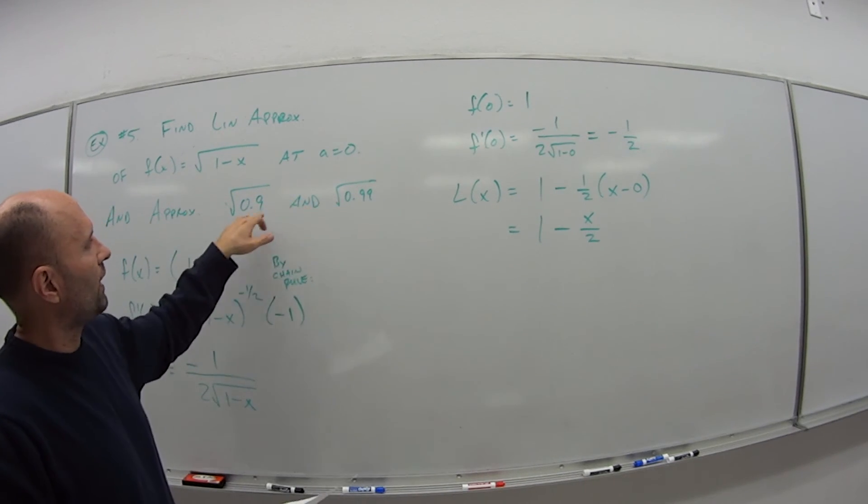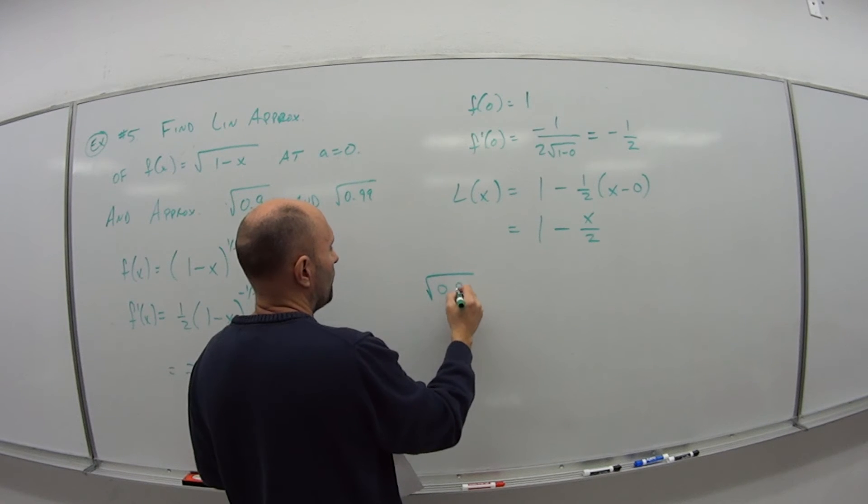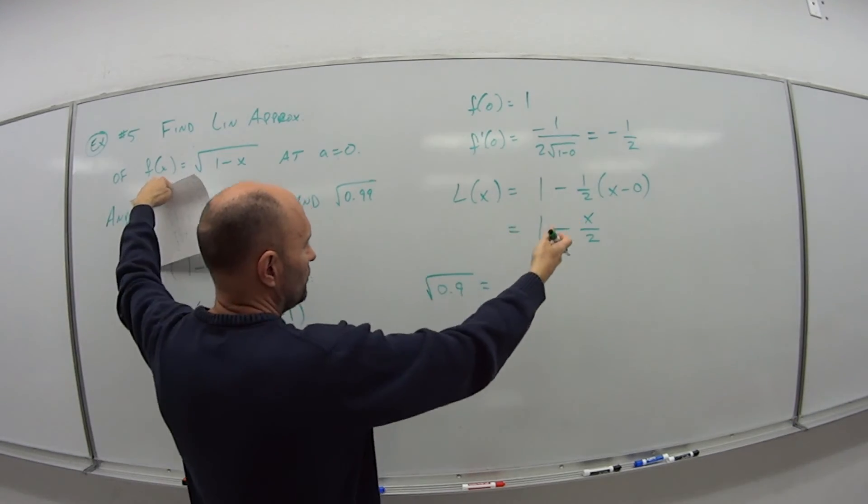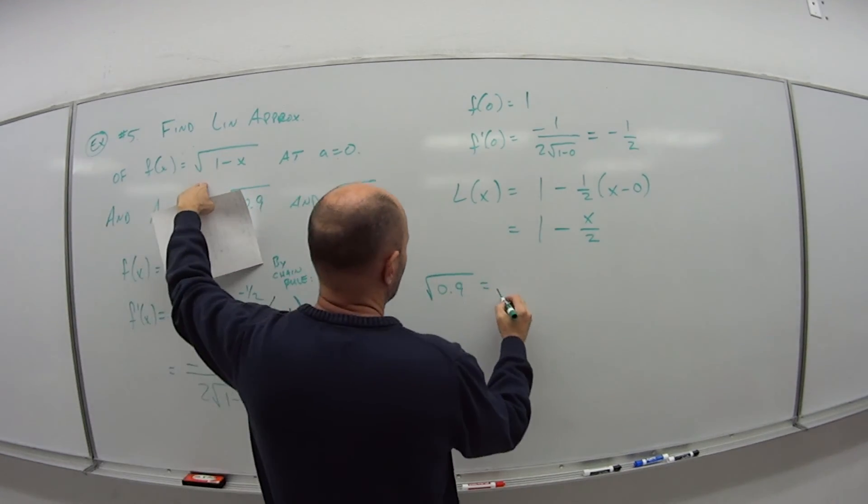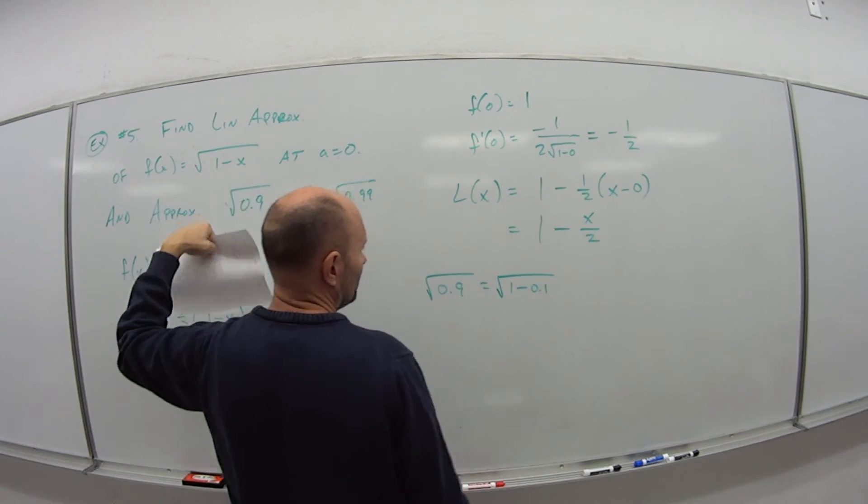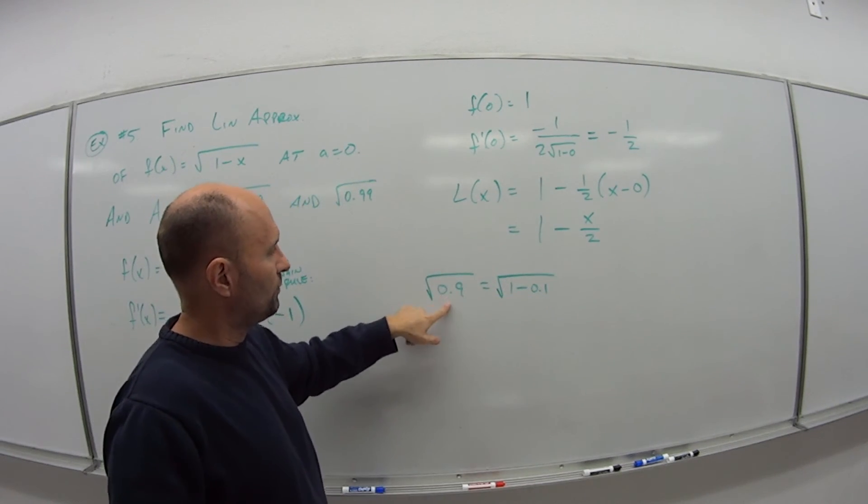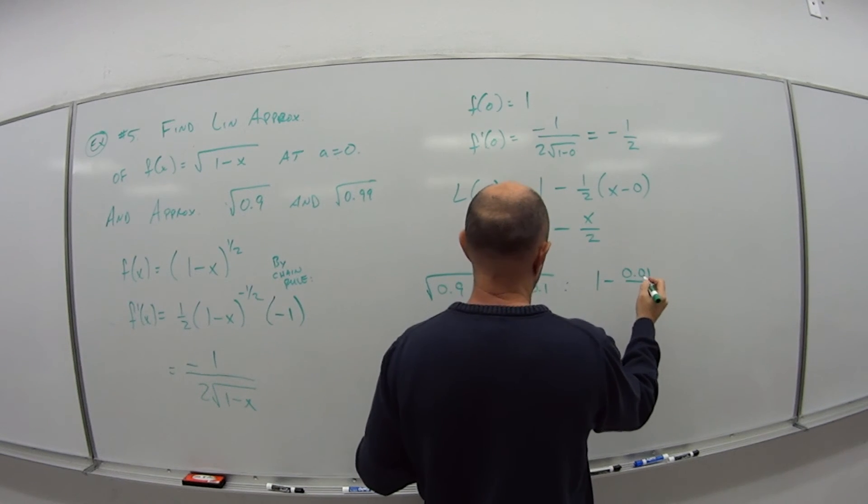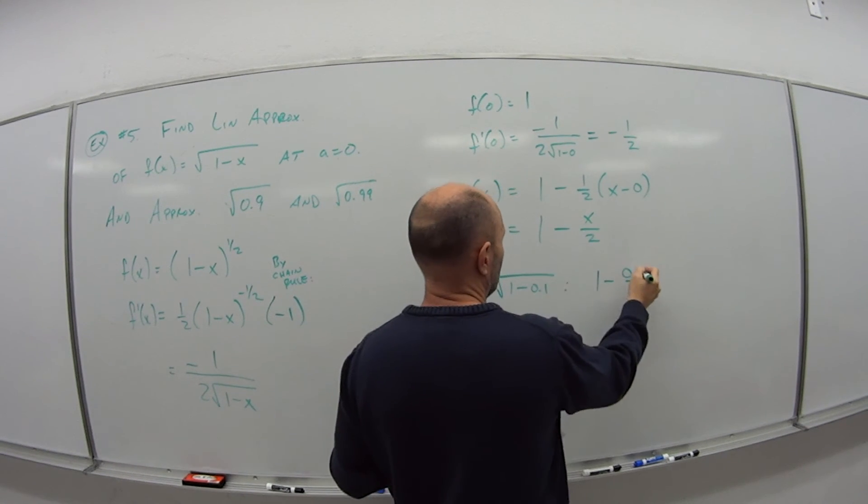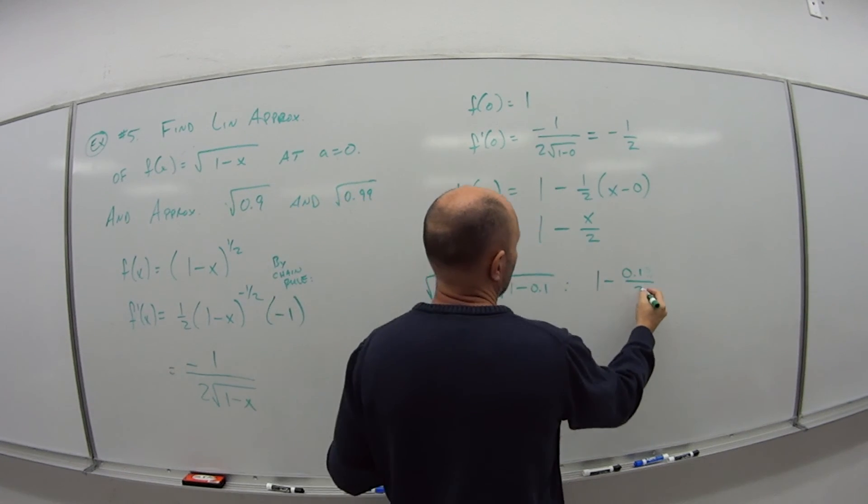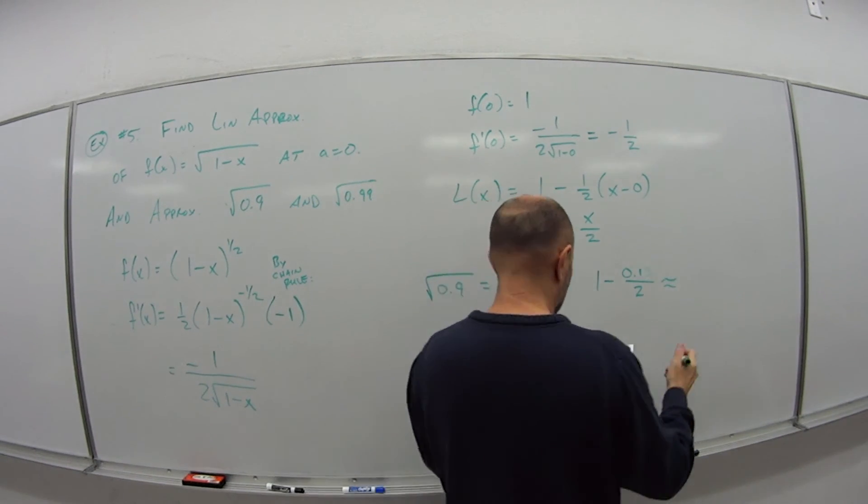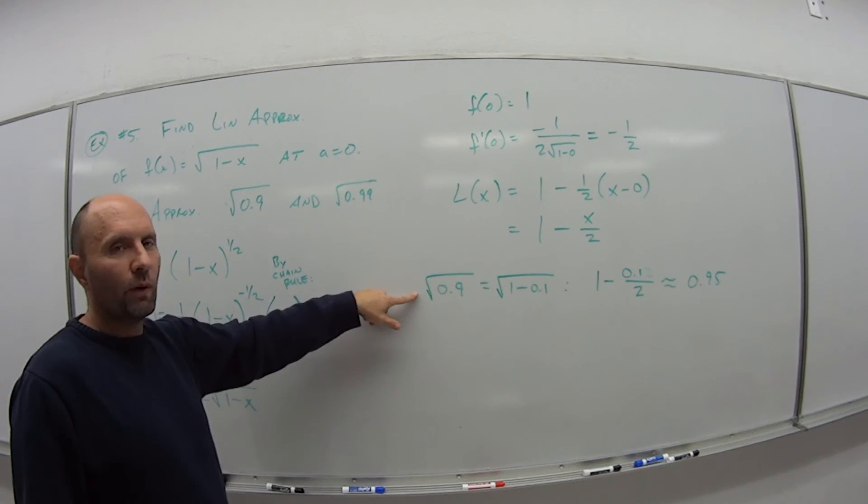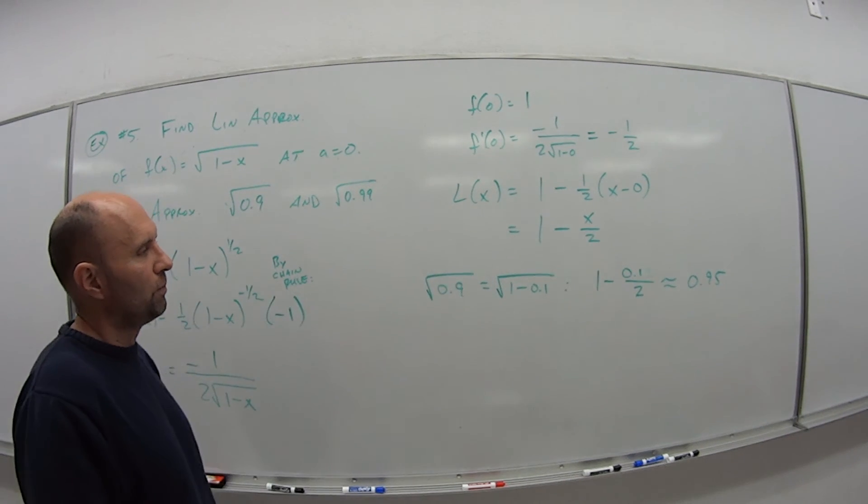Now I want to actually approximate these two values. So square root of 0.9, well this is what? Because I have to relate it back to my original function so I know what's my value of x to plug into the approximation. So this is like the square root of 1 minus 0.1. 1 minus 0.1 is 0.9, so that means my value for x is 0.1. So I have 1 minus 0.1 over 2, which gives me 0.95. So I'm saying the approximation for square root of 0.9 is roughly 0.95.